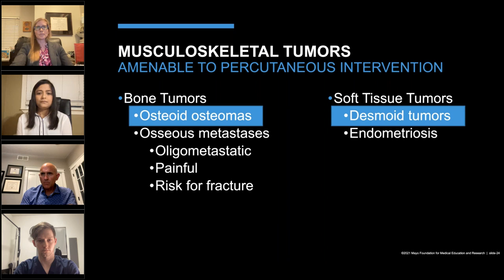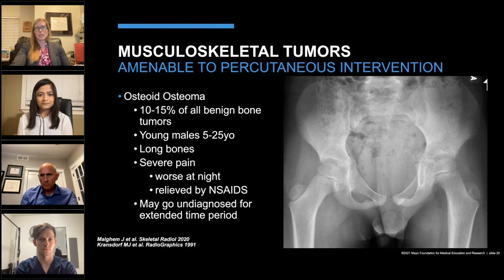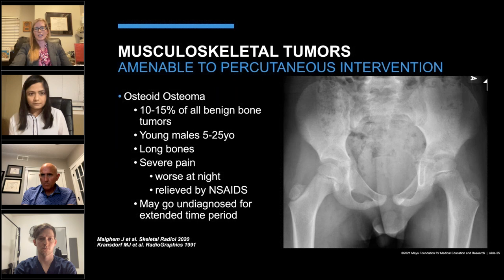Osteoid osteoma accounts for 10 to 15% of all benign bone tumors. It mostly affects young subjects, mainly between 5 and 25 years of age, with a male predominance, though it can affect people over 40. The majority arise in the cortex of long bones, usually diaphyseal or metadiaphyseal. Clinically, pain is almost always present — initially mild or inconstant but may become more severe and persistent. The pain is typically more intense at night and relieved by NSAIDs. Duration of pain before diagnosis averages 10 to 15 months, and even longer when the osteoid osteoma is intra-articular, with an average delay of up to two years or more before recognition.